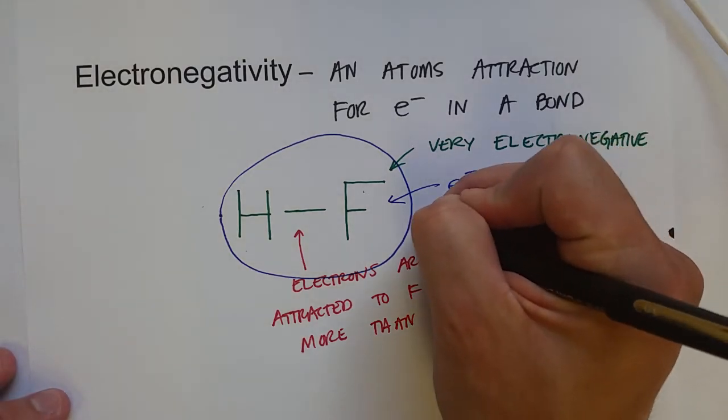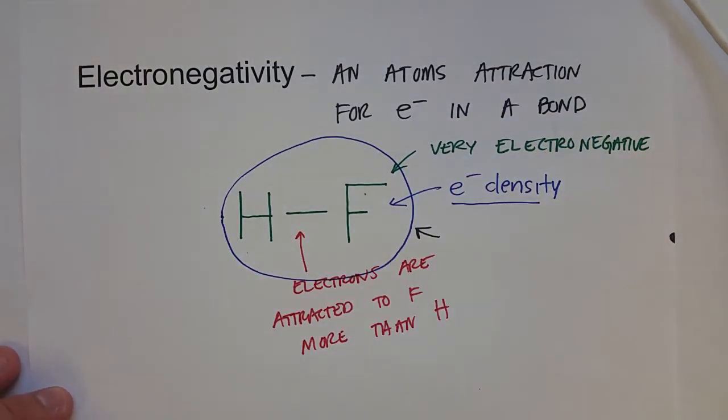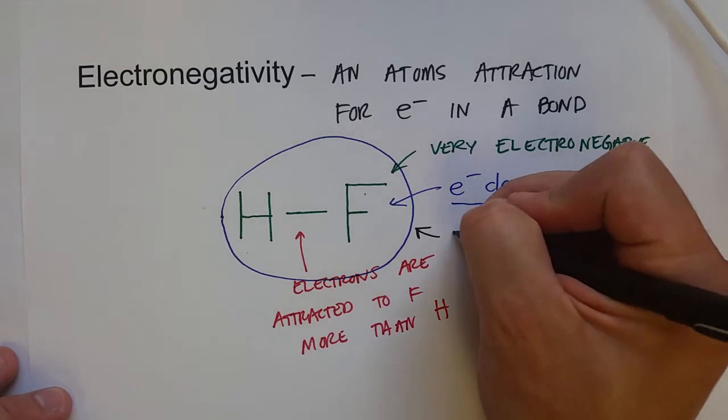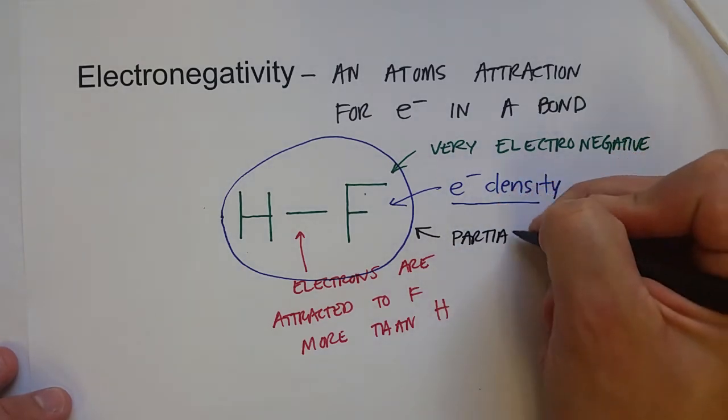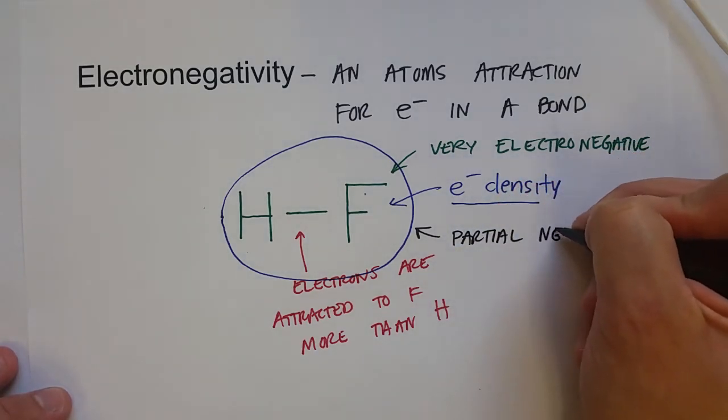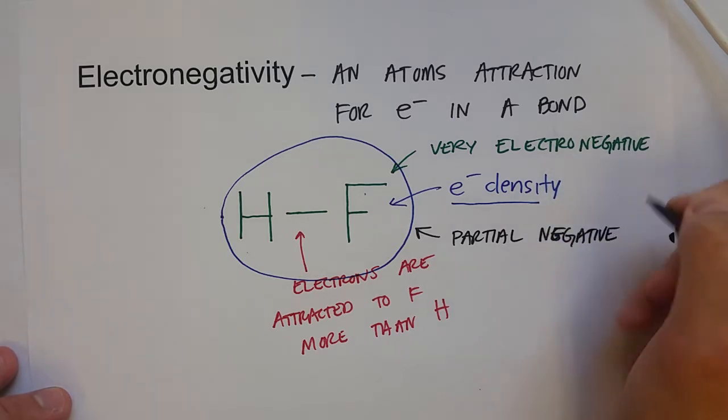So what happens is that this fluorine atom, or this molecule, this bond, creates a partial negative charge. Not a full charge, it doesn't become an ion.